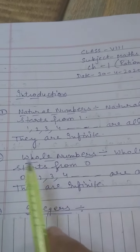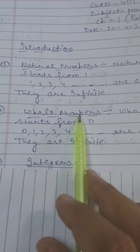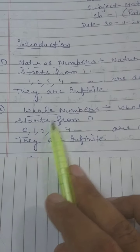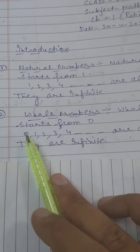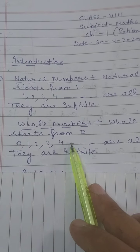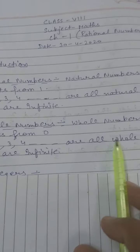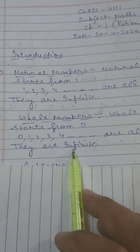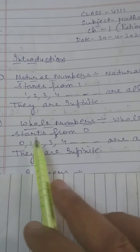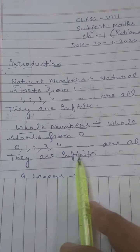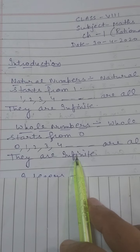After this, the definition of Whole Numbers. Whole Numbers start from 0: 0, 1, 2, 3, 4, and so on. All are whole numbers. They are infinite. We cannot count the whole numbers.